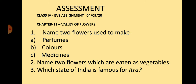Now write down the answers of these questions. Question number one: name two flowers used to make (A) perfumes, (B) colors, (C) medicines. Question number two: name two flowers which are eaten as vegetables. Question number three: which state of India is famous for Yitr? Children, write down these answers in your notebook and learn the answers with their spellings. That's all for today's class. Thank you.